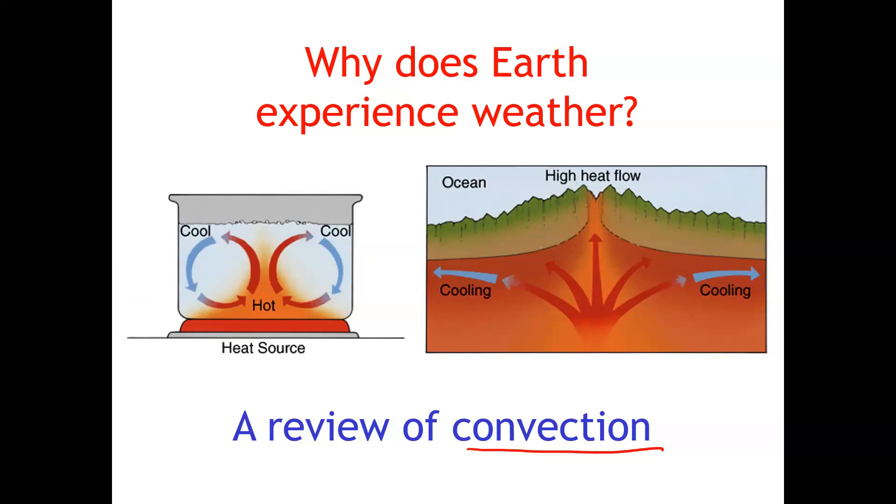We've seen this before when talking about how solid material in the mantle heats up near the core boundary, rises, cools off, gets more dense, and falls down - that's what drives plate tectonics. Convection also causes water to move in a boiling pot. The water sinks, gets hot, expands and rises, then cools down, gets more dense, and sinks again. The same thing happens in air at Earth's surface.